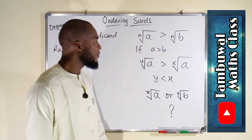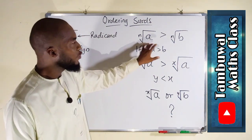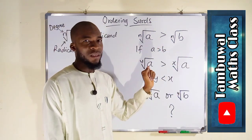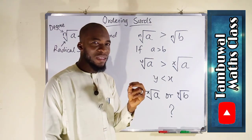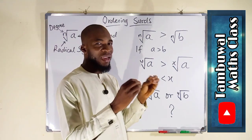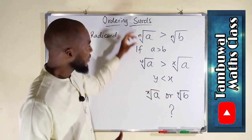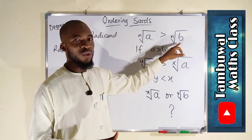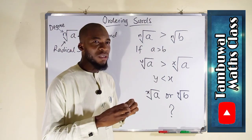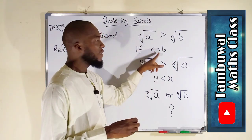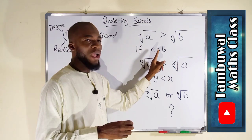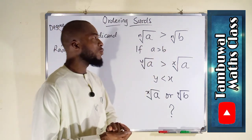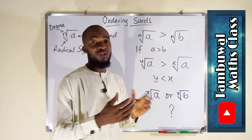Look at the first condition. Here we have two surds but they have the same degree n. If two or more surds have the same degree, you only need to consider the radicands. We say the nth root of a is greater than the nth root of b. This condition only holds when a is greater than b; otherwise we say nth root of b is greater than nth root of a.